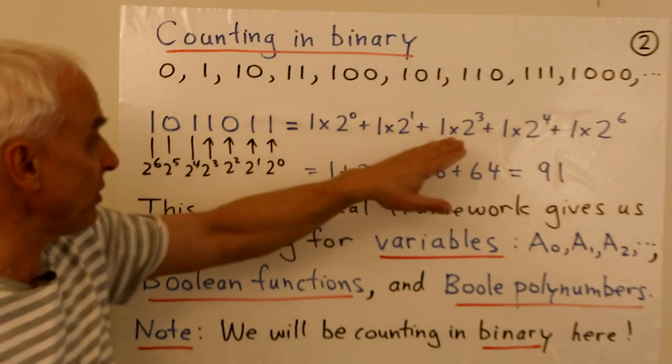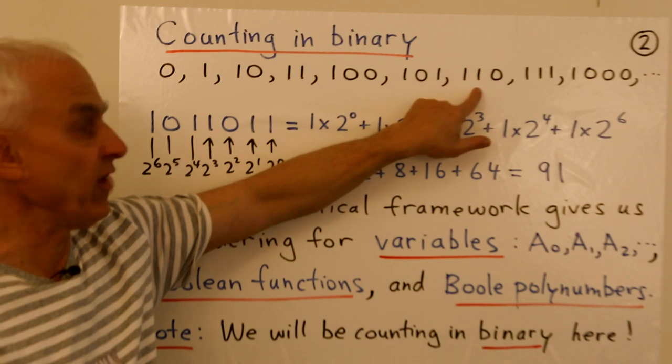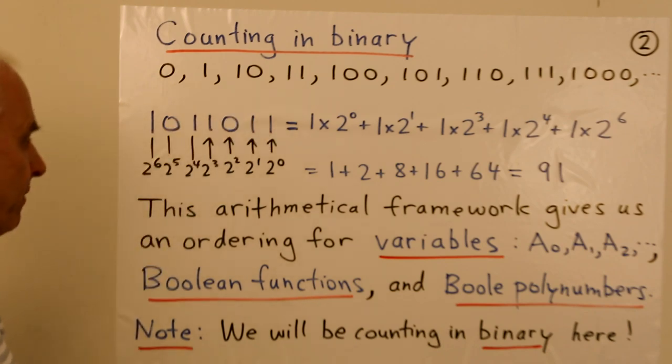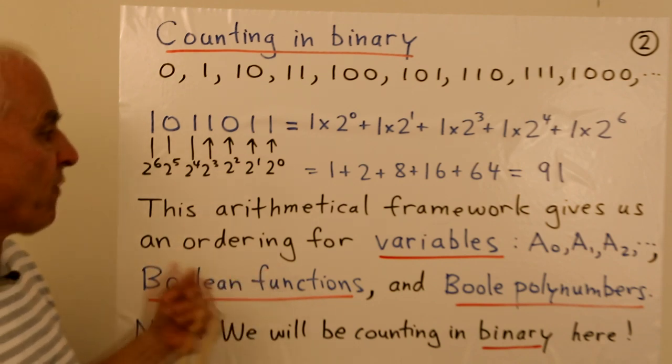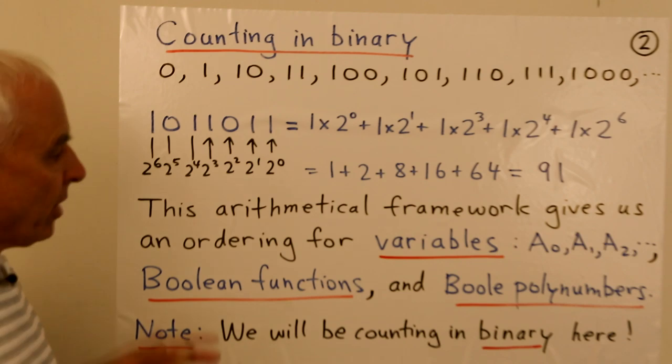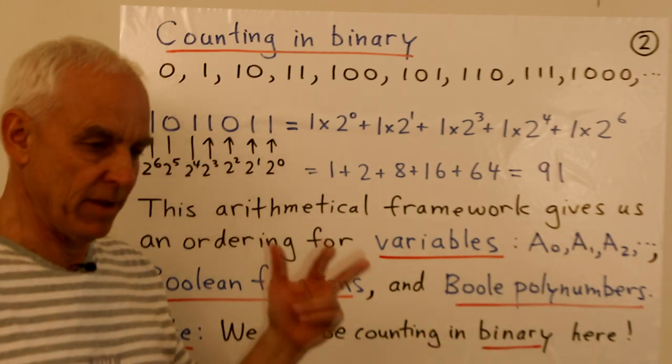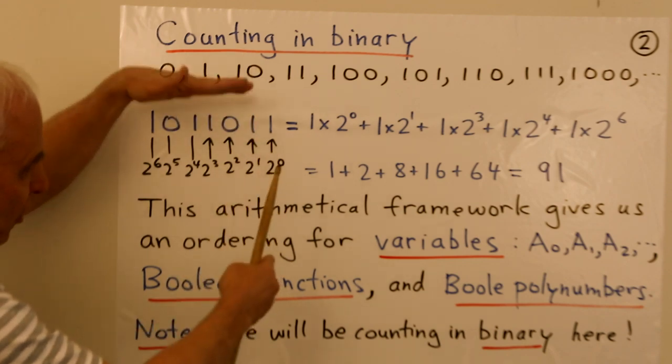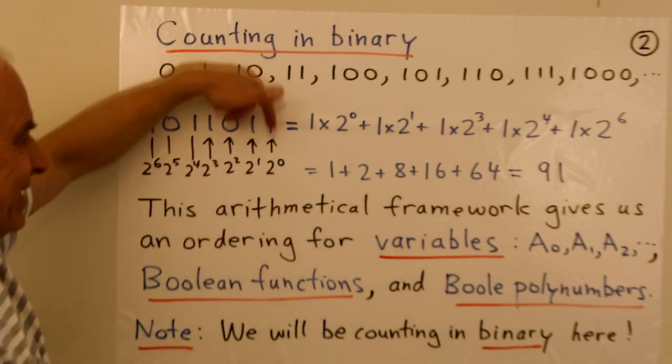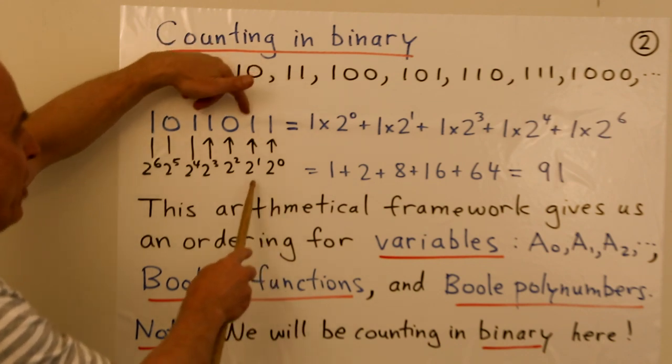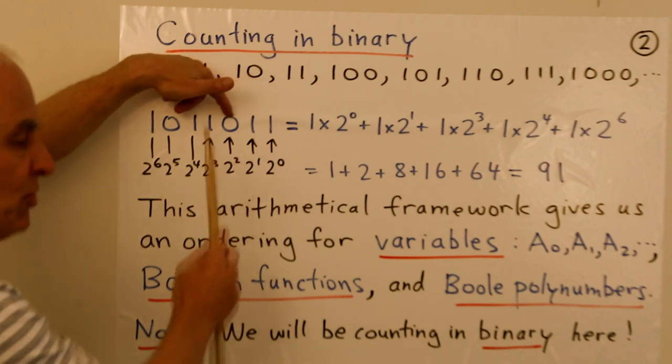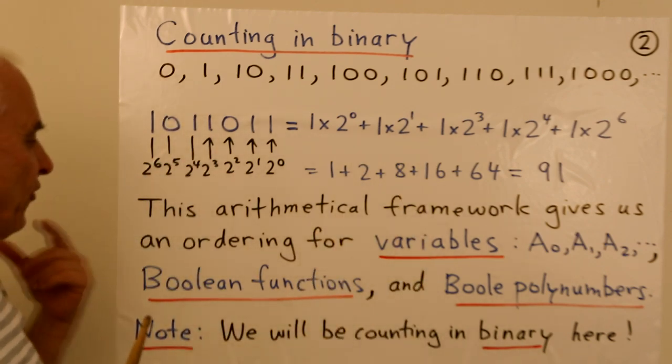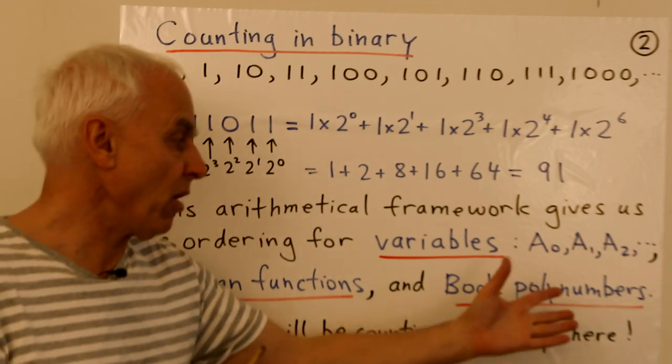So this is the binary representation of the number 91. And we have to become familiar with these things. So I want you to immediately look at this and say, oh, that's four plus two, that's six, that's four, that's three, that's seven, that's eight, that's two. So this arithmetical framework gives us an ordering for variables. We have the variables A0, A1, A2. I've already mentioned that we're going to put them in that particular order. We're thinking of the A0 variable as being the rightmost one.